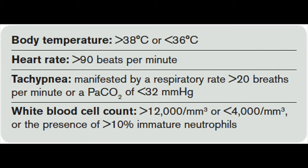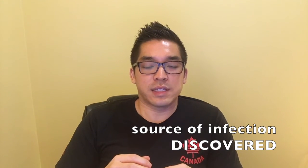Next is SIRS criteria — systemic inflammatory response syndrome. This is the way to track whether an infection is starting to develop. Tachypnea counts as one point; temperature, if they are febrile or hypothermic, counts as one; WBCs — leukocytosis greater than 12k or leukopenia less than 4k counts as one; and tachycardia counts as one. Two or more points qualifies as SIRS. If there's a source of infection that's sepsis. If there's infection with evidence of end-organ damage or hypotension that's severe sepsis. And if someone is hypotensive and not responding to fluids, that's septic shock.